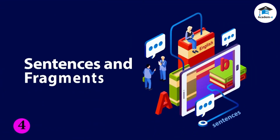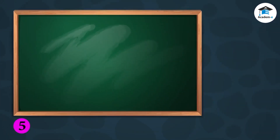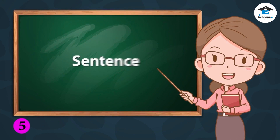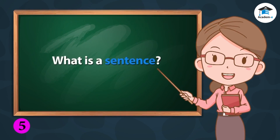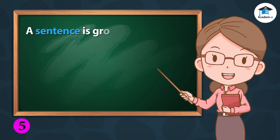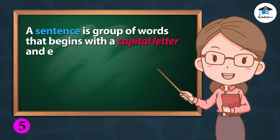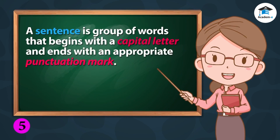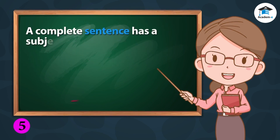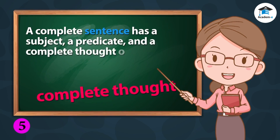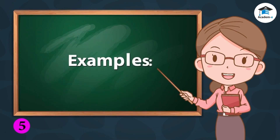Sentences and Fragments. Today's lesson is about the difference between a sentence and a fragment. What is a sentence? A sentence is a group of words that begins with a capital letter and ends with an appropriate punctuation mark. A complete sentence has a subject, a predicate, and a complete thought or idea. Examples: